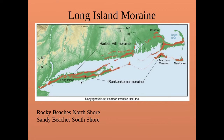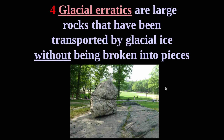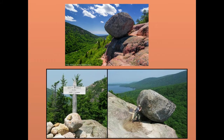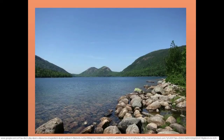A glacial erratic is a large rock transported by glacial ice without being broken into pieces — item four in your notes. The chemical composition of the erratic doesn't match the bedrock below it. Bubble Rock at the top of the Bubbles mountain in Acadia National Park is a famous glacial erratic, precariously perched above Jordan Pond. The U-shaped valleys at Acadia are proof that a glacier moved through there.